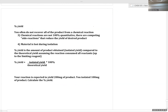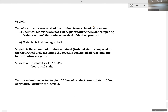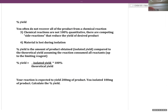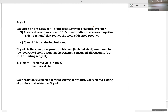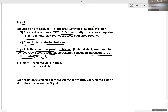Let's talk about one last idea — the idea of percent yield. You do not often recover all of your product from a chemical reaction, for two reasons: one, chemical reactions are not 100% quantitative because there are competing side reactions that reduce your yield; and two, material is lost during isolation. Percent yield is the amount of product obtained compared to the theoretical yield, assuming the reaction consumed all reactants up to the limiting reagent.